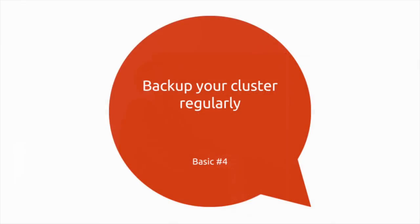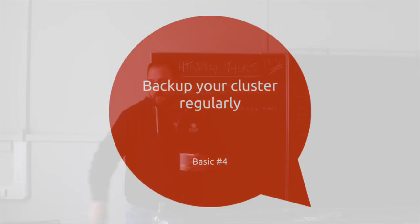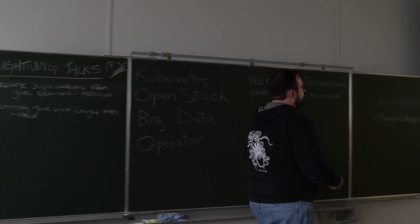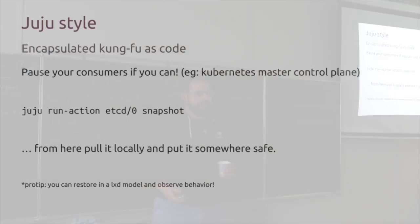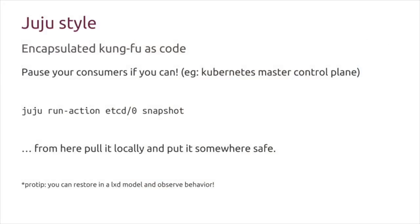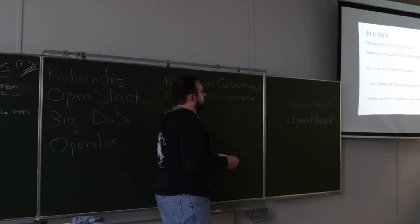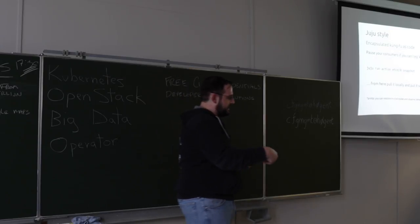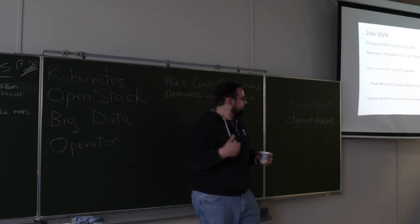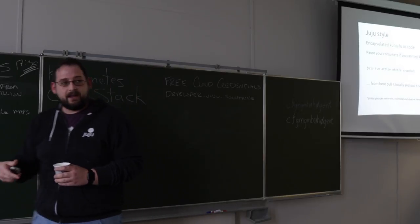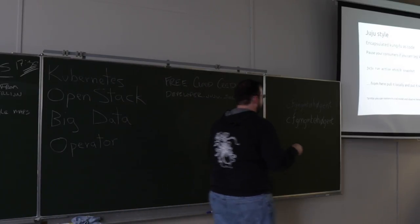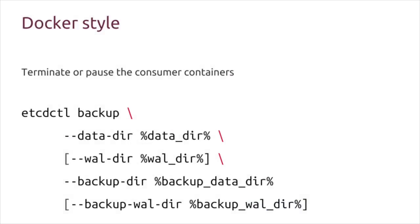Now we're going to get to the meat of what I really want to talk about: how to back up your cluster regularly. If you're not actively doing this, you're going to have a bad time if anything goes wrong with etcd. Backing up your cluster is a fairly straightforward process — you only need to target one unit because it distributes the data. We've encapsulated this in Juju with an action. It basically executes the backup and gives you a tarball that you can pull off your unit. This ties in with the next slide where you can take that backup snapshot and test it on your laptop — a great way to validate that it worked before you archive it.